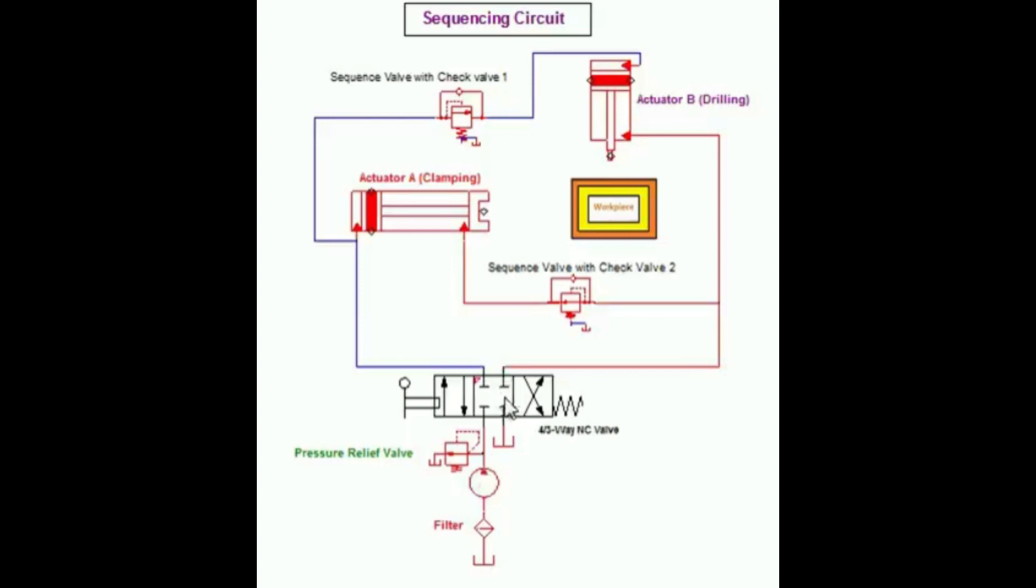In order for this circuit to function properly, the clamp cylinder must extend completely before the drilling cylinder begins to extend. The sequencing valve accomplishes this by not allowing flow into the drilling cylinder branch